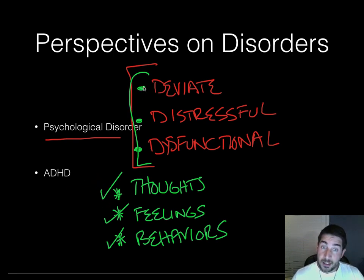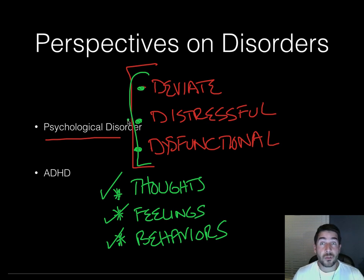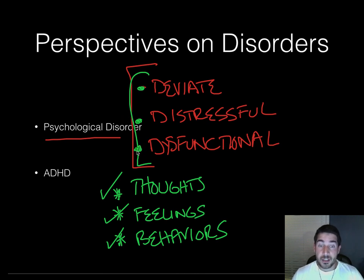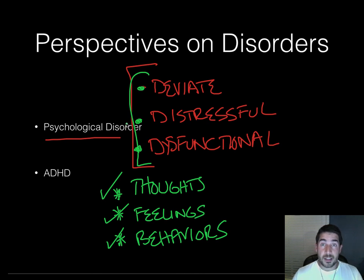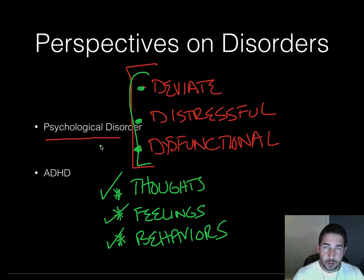You have to have all three of these things present in order to have a psychological disorder. Deviant means it can vary from culture to culture. What might be distressful for one person might not be distressful for another. And dysfunctional means it has to stop or hinder you from operating in normal life. If it doesn't hinder you, then it's not a disorder. So a psychological disorder for one person may not be a psychological disorder for another.